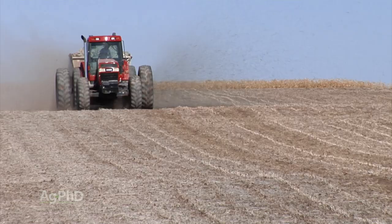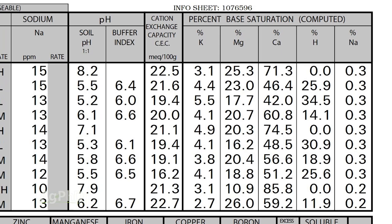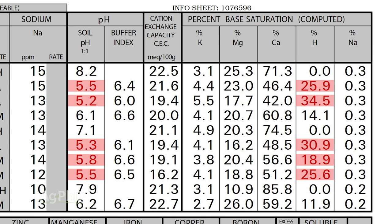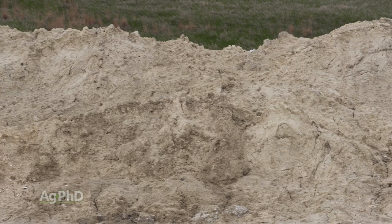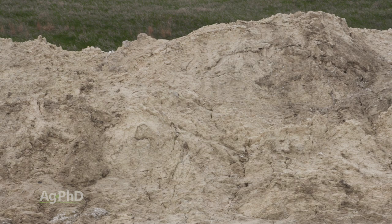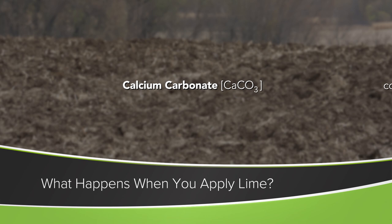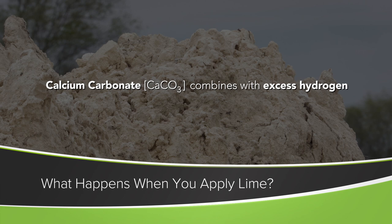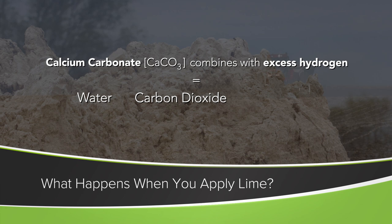When you have low soil pH, basically what you have is just too much hydrogen. How do you fix that? You put out calcium carbonate. When you put calcium carbonate — or lime — onto that soil, you're going to combine it with the excess hydrogen, and the result is you're going to end up with water, carbon dioxide (don't forget, carbon dioxide is what plants breathe in, so that's great), and free calcium for that soil. So no harm, it's all good — that's what lime does in a field.